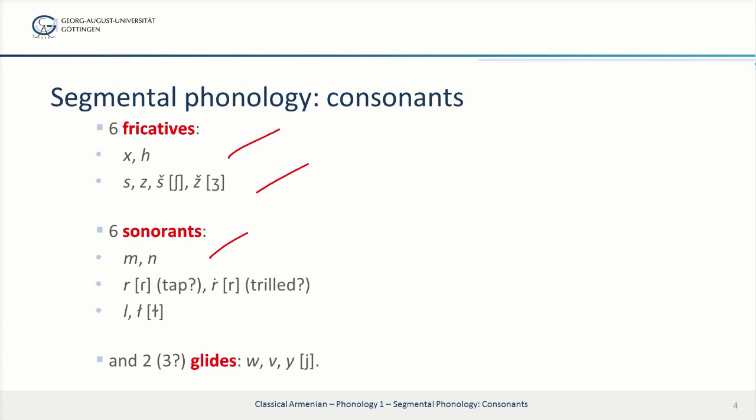For example, the tap R in words like 'water', and a trilled R represented by R with a dot on top. There were also two kinds of L: a normal L, and a probably velarized L, transcribed as L with a slash through it.